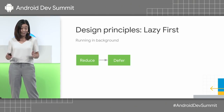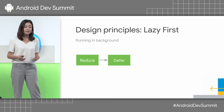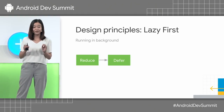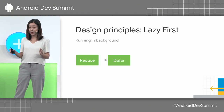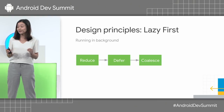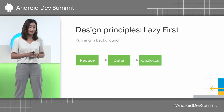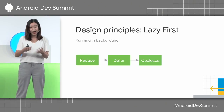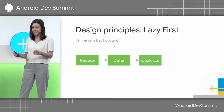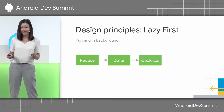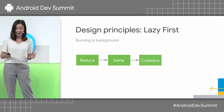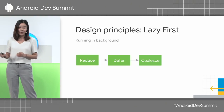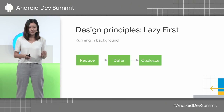Our second advice is: whenever you're running tasks in the background, keep in mind the lazy-first design principle. Try to reduce the work you're running in the background — think about, do I really need to run in the background? Can this wait until my app is in the foreground? Do I need to run with this frequency? Maybe reduce some work. And if you really need to run in the background, try to defer that work to a later time, say when the device is plugged in. Try to coalesce the work you do in the background. In Lollipop we introduced JobScheduler, which helps the system intelligently batch all background work. And this year we introduced WorkManager in Jetpack, which makes running background work easier, and once it hits stable it will be the recommended way to do background work.